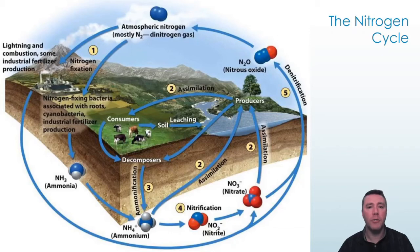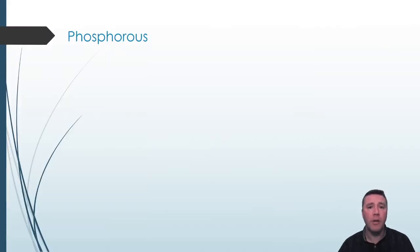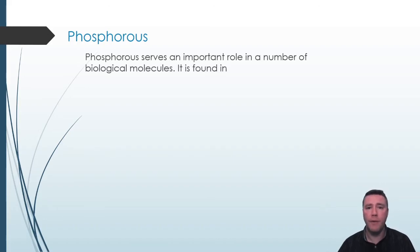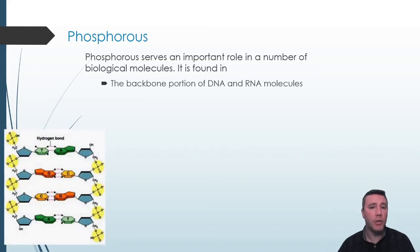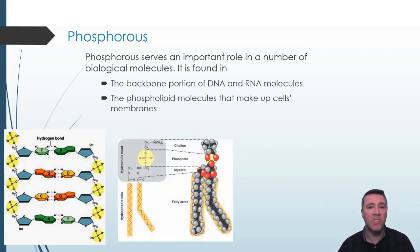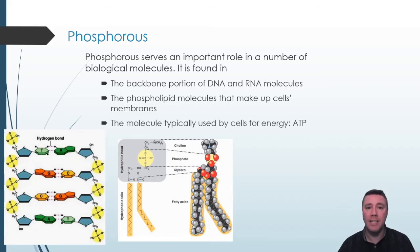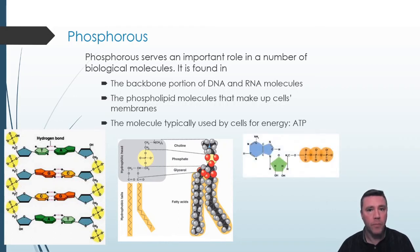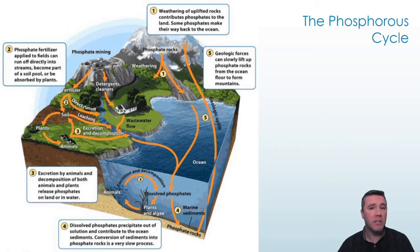The final biogeochemical cycle we're going to take a look at is the phosphorus cycle. Phosphorus is found in a variety of organic molecules. It is important in the sugar-phosphate backbone of nucleic acids like DNA and RNA. It is also necessary to construct the molecule used to build cell membranes — the phospholipid. And it is also found in ATP, the molecule used by cells as an energy source. The phosphorus cycle shares many similarities with the carbon and nitrogen cycles, but there are a few notable differences.